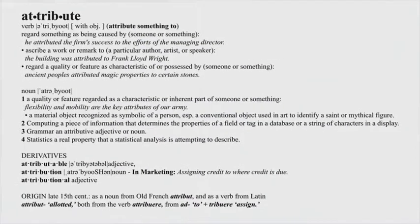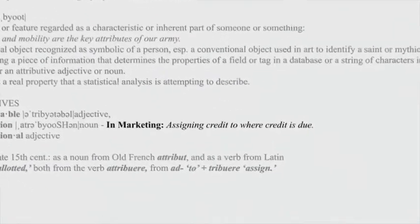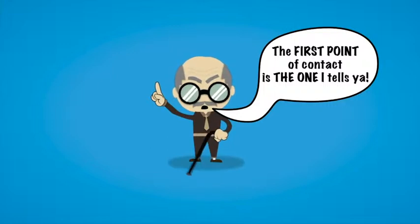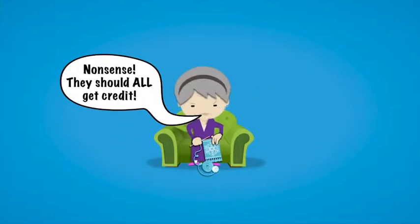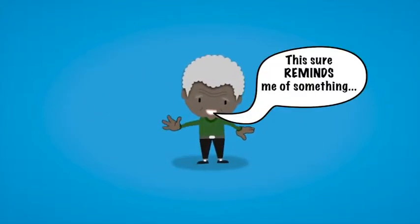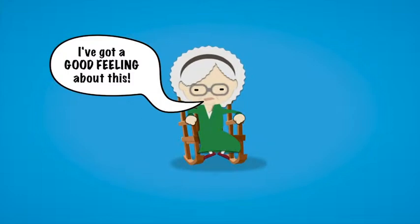Defining attribution is pretty straightforward, but results depend on the model you choose. Simple attribution is the oldest model, giving full credit to the first or last click. Other simple attribution models apply equal credit to all touch points, or arbitrarily assign weights based on past experience, or maybe just a hunch.